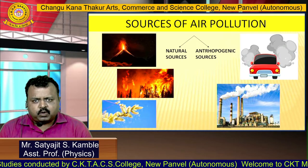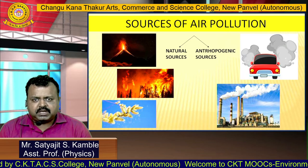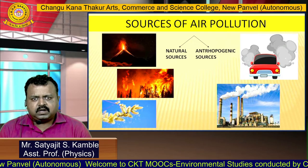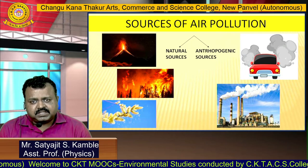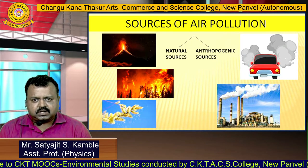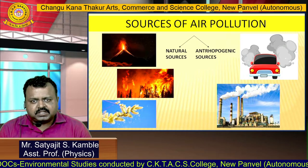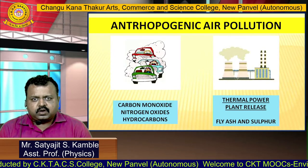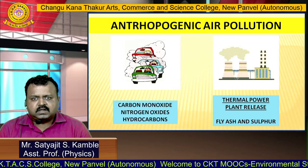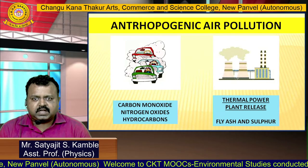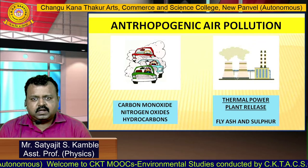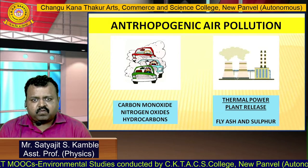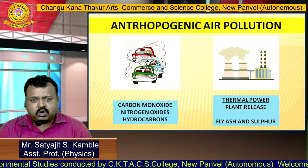There are two main sources of air pollution: natural sources and anthropogenic sources. Natural sources include volcanic eruptions, forest fires and pollen from plants. The major share of air pollution is due to anthropogenic sources like vehicles, industries, and cutting down of trees. Anthropogenic air pollution includes vehicular pollution — from vehicles, carbon monoxide, nitrogen oxides and hydrocarbons are released. There are also industries like thermal power plants or metallurgical industries which release fly ash and sulfur because they are based on burning of coal.